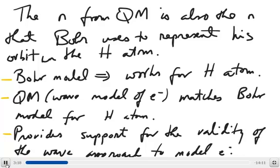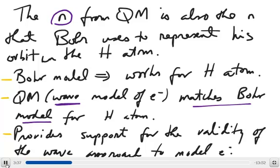Quantum mechanics, however, uses the standing wave model to represent the electron, so it's completely different from the Bohr model. The fact that quantum mechanics arrived at the same n as the Bohr model for the hydrogen atom suggests that the quantum mechanical model is valid and can be used to predict properties of atoms with more than one electron. Experimentally, the quantum mechanical model actually predicts what we would observe in experiments.